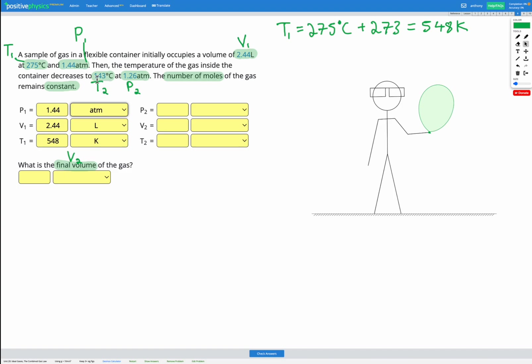Then we're given T2, a final temperature of 143 degrees C. Again, we're going to have to convert to Kelvin. So T2 is 143 degrees C. Let's add 273 to that to convert into Kelvin. That gives us a final temperature of 416 Kelvin.